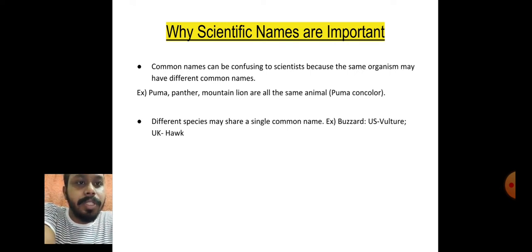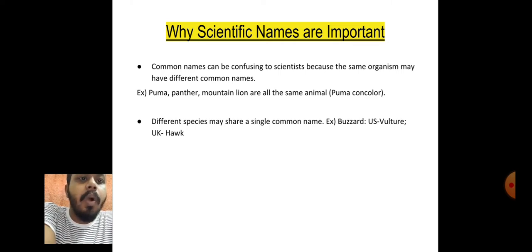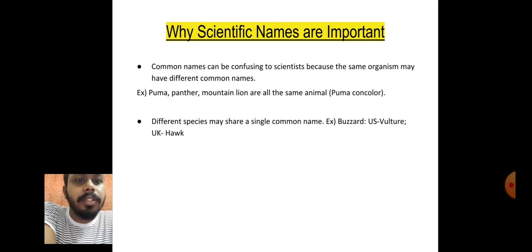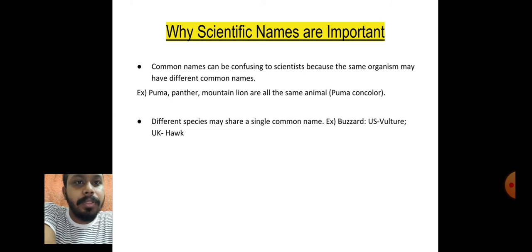Scientific names are important because common names can be confusing to scientists. For example, puma, panther, and mountain lion are all the same animal, but their names are different. This is confusing, so scientific names — a single universally accepted name — are used instead.